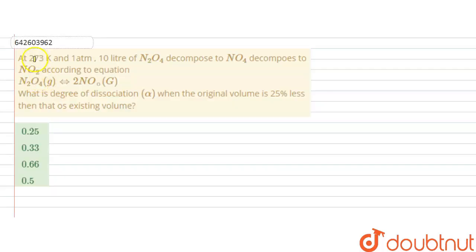Hello students, the question is at 273 Kelvin and 1 atmosphere, 10 liters of N2O4 decomposes to NO2 according to the equation N2O4 forms 2 NO2 gaseous. What is the degree of dissociation alpha when the original volume is 25% less than that of the existing volume?